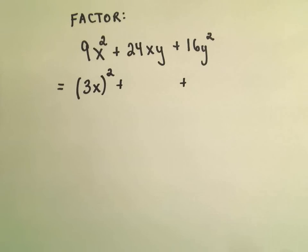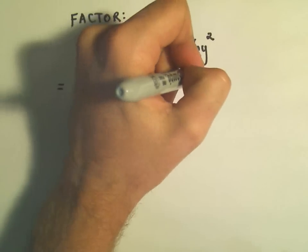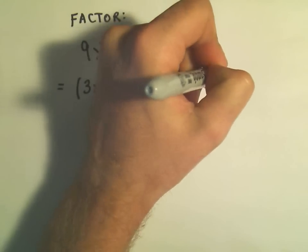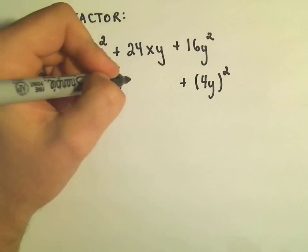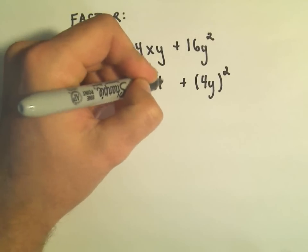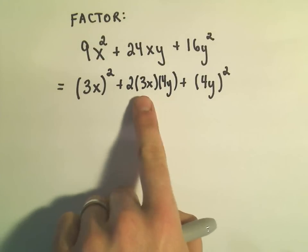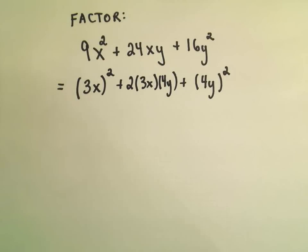I'm going to also do the same thing for my 16y squared. We'll come back to the middle term. Notice I could write that as 4y all squared. And notice now if I take 2 times 3x times 4y, if I multiply all this together, I'll get my 24xy back.